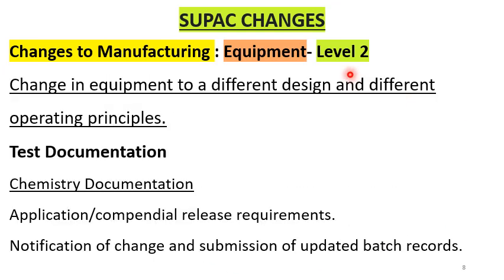Level 2 equipment changes involve changing the equipment to a different design or different operating principle. Here both the design and operating principle are changed. Test documentation requires chemistry documentation with application/compendial release requirements, notification of change, and submission of updated batch records.